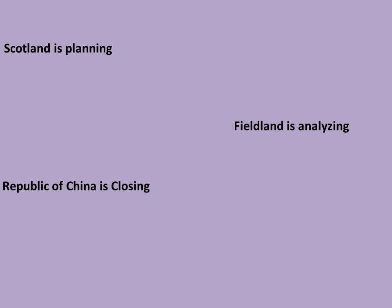One more technique to remember all six steps: use these three sentences — 'Scotland is planning,' 'Finland is analyzing,' and 'Republic of China is closing.' For our answer, let us keep Finland as 'field land.' If we remember these three sentences, we will remember the full answer.